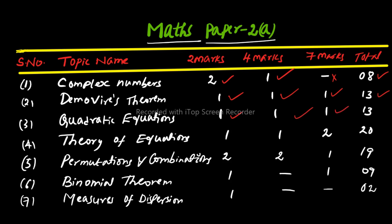Combinations: 2 two-mark questions, 2 four-mark questions, and 1 seven-mark question — totalling 19 marks weightage. Binomial Theorem: 1 two-mark question, no four marks, and 1 seven-mark question — totalling 9 marks weightage. Measures of Dispersion: most of the portion is deleted; only some part remains. From this we can get 1 two-mark question — simply 2 marks weightage.